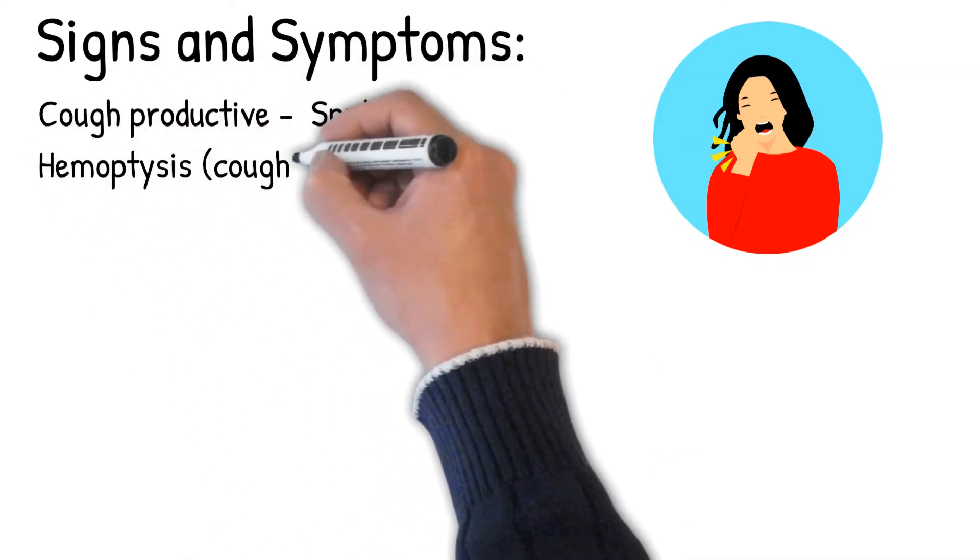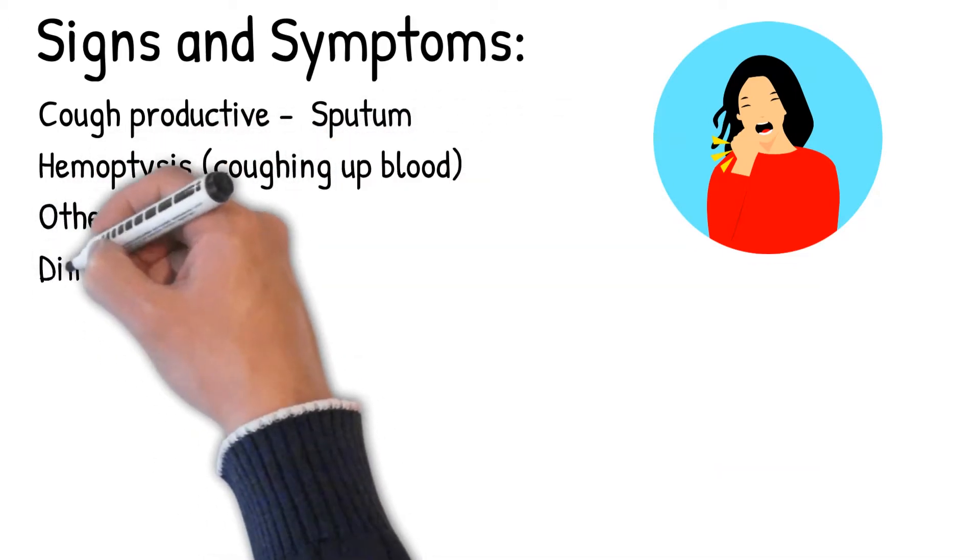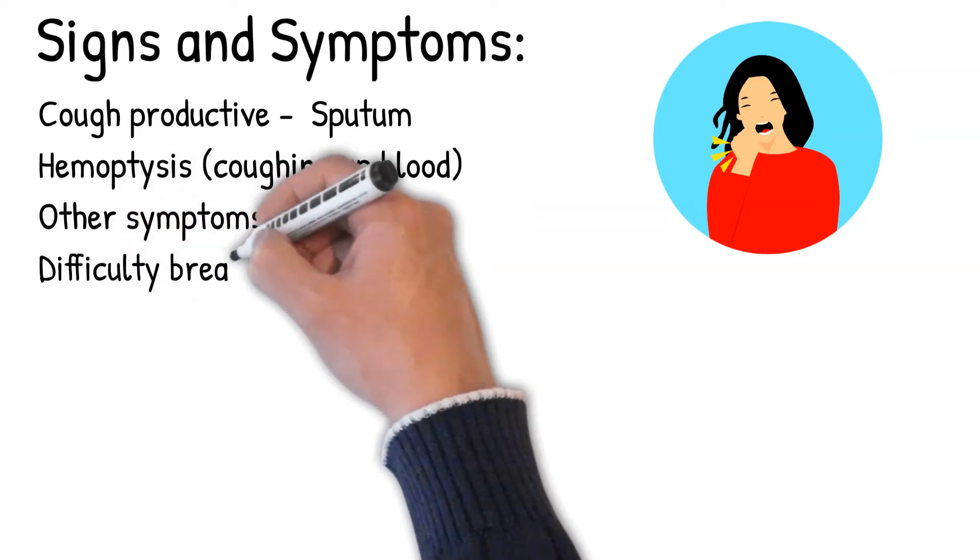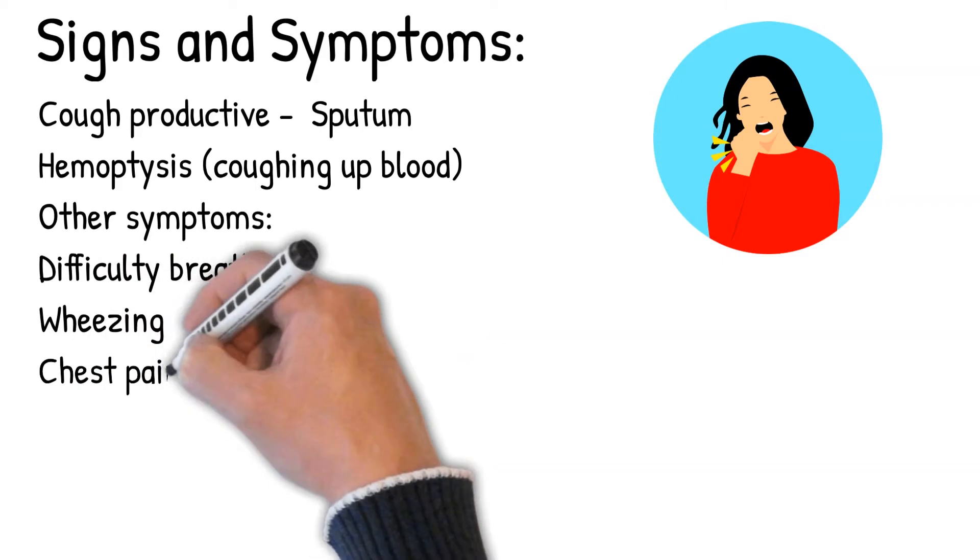Hemoptysis, coughing up blood that is sometimes massive. Other common symptoms include difficulty breathing, wheezing, a whistling sound when you breathe, chest pain, and digital clubbing.